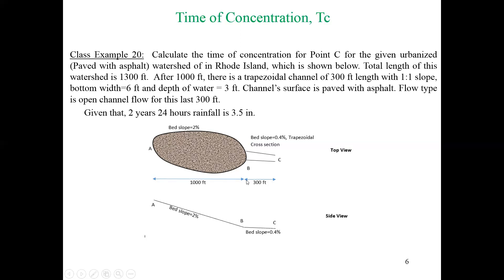After 1000 feet, this is the trapezoidal channel. The channel surface is paved with asphalt, so the surface type at this watershed and this trapezoidal channel is the same—both are paved with asphalt. They also mentioned flow type is open channel flow for this last 300 feet. Given that 2-year 24-hour rainfall is 3.5 inches. This is the top view—you can see the watershed and the channel. The length is given; for the watershed the slope is 2 percent.